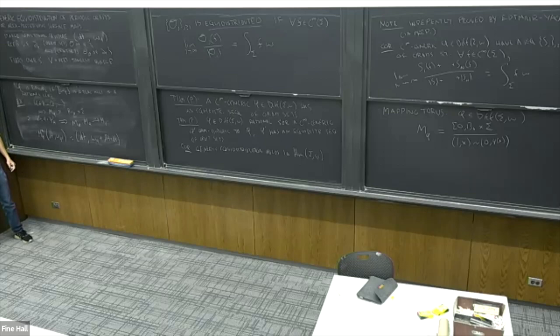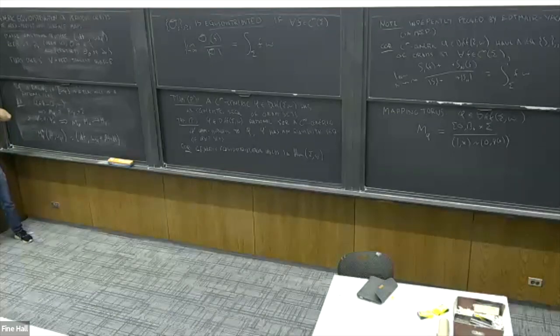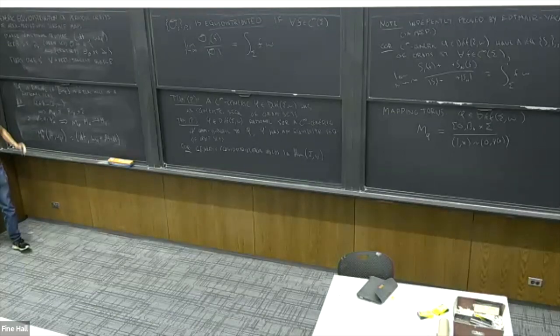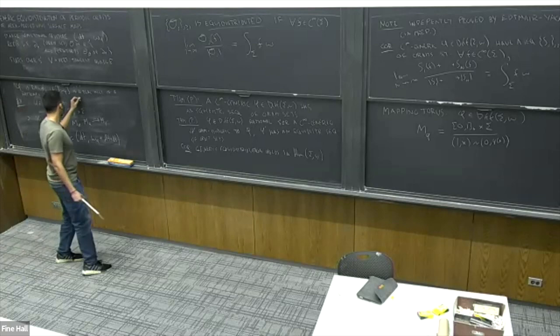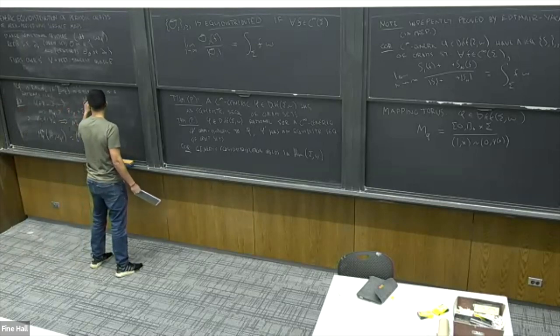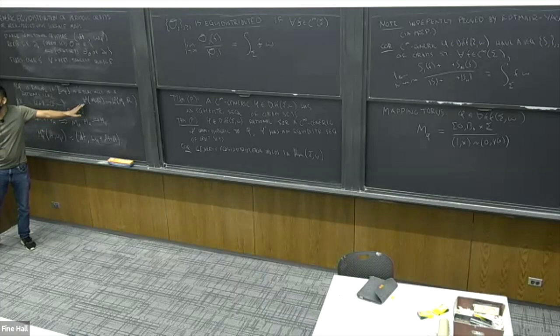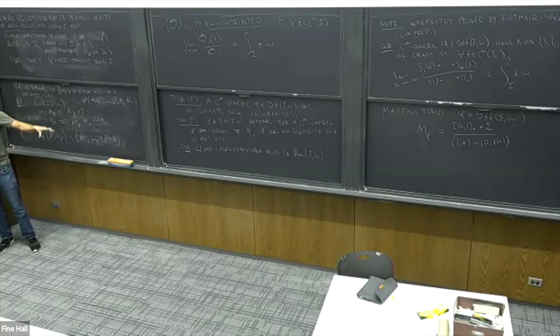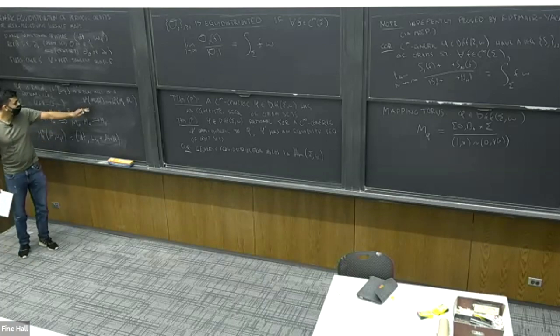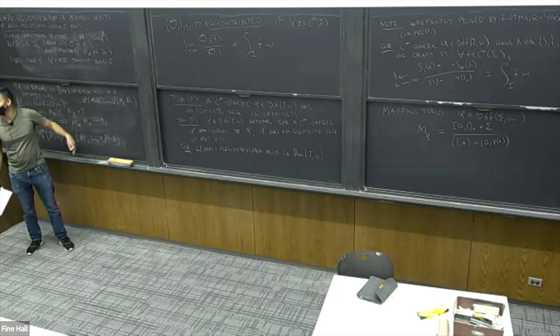Regarding the question about what rational map means: a rational class means something in the image of H^2(M; Q) inside H^2(M; R) — in other words, two-forms which integrate to rational numbers over any integral two-dimensional cycle. If the cohomology has rank more than one, this is a pretty non-trivial property. Being a real multiple of a rational class is a pretty non-trivial condition.